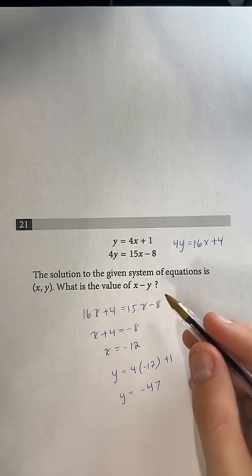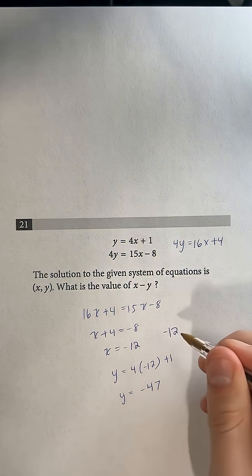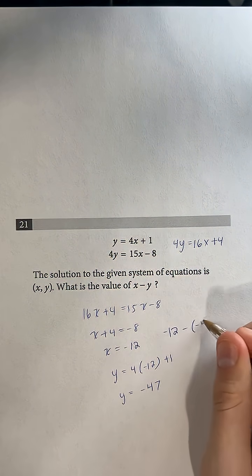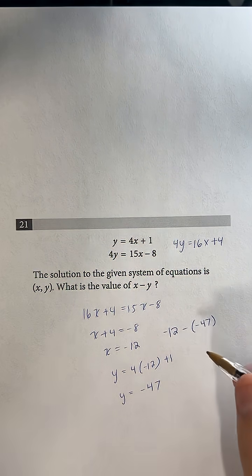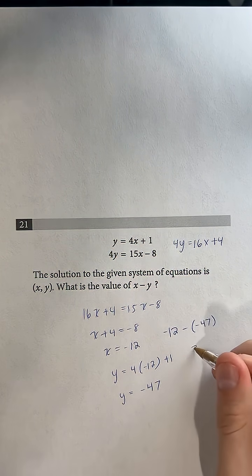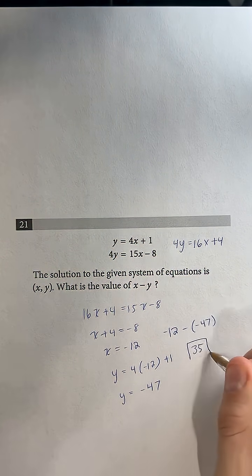And so x minus y is going to be negative 12 minus negative 47, so basically negative 12 plus 47, or 47 minus 12, which is just going to be 35. And that's our final answer.